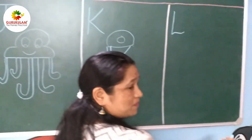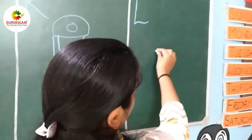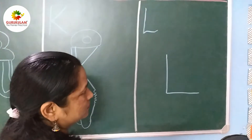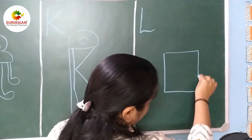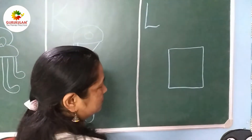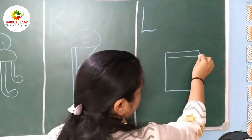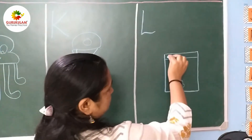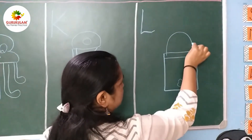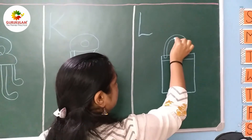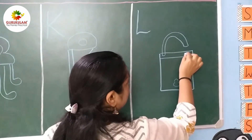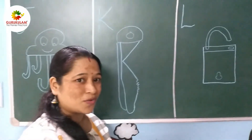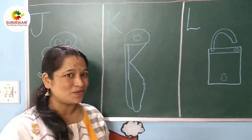Now with the help of L, what we can draw? This is our capital L. Make it like that, then a simple line from here. Upgrade, start from this, and for lock. Hope you enjoyed this class. See you soon. Bye!